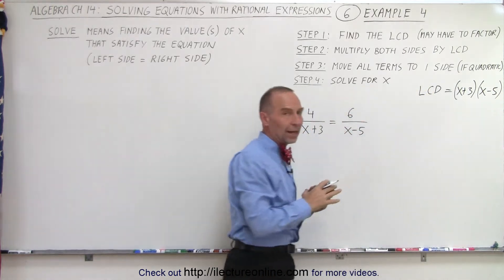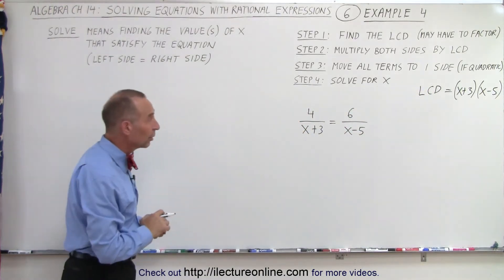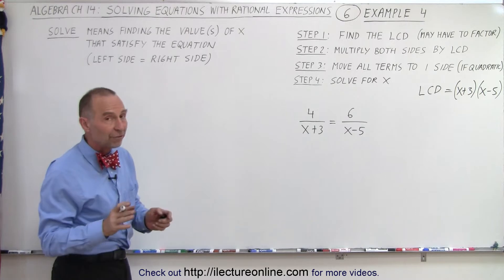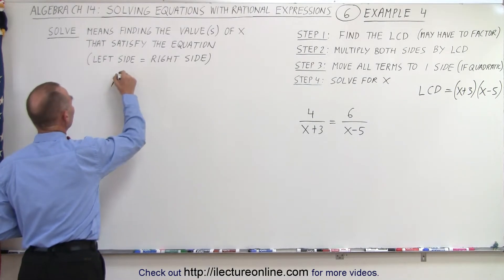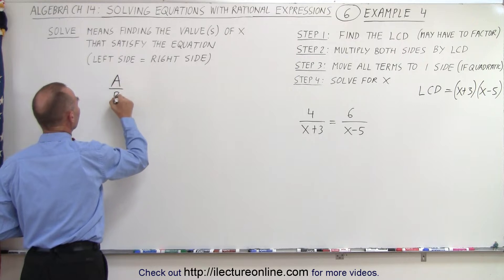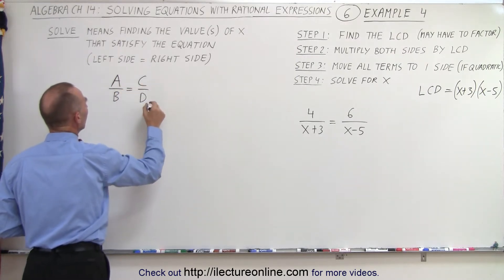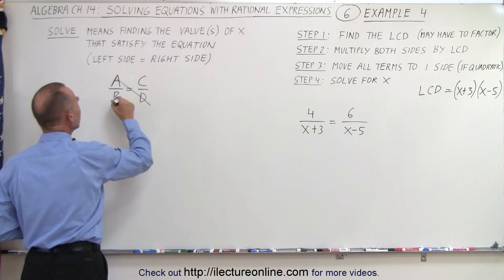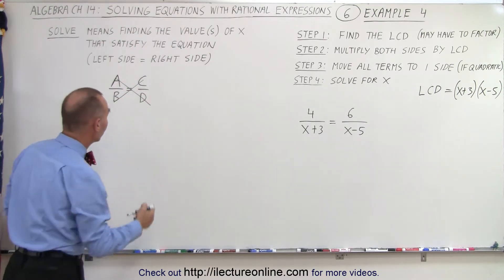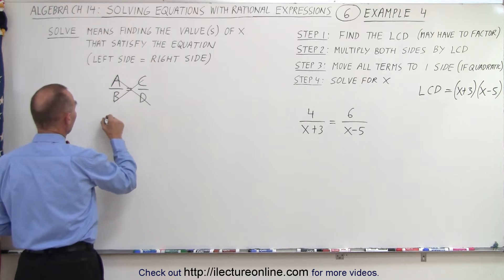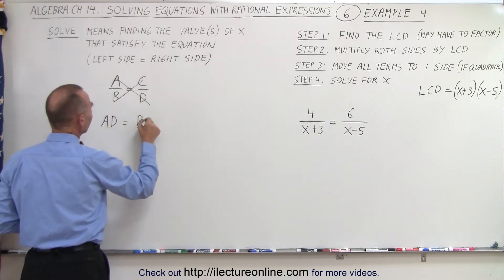And then, of course, we could multiply both sides of the equation by the lowest common denominator. However, what we could also do is employ this technique. If we have two fractions set equal to each other, a/b equals c/d, we can move any term across the diagonal like this. In other words, we can say that this is equal to a times d equals b times c.